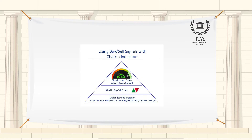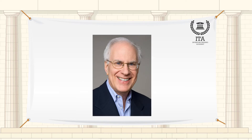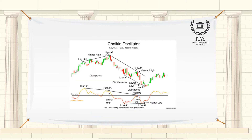Interpretations of Chaikin's volatility vary, but many analysts believe that changes in volatility are important indicators of potential trend reversals. Chaikin's volatility was developed by Mark Chaikin. It is a volatility indicator which calculates the exponential moving average of the difference between the current interval's high and low prices and its value a number of periods previously. A sudden increase indicates a directional move.